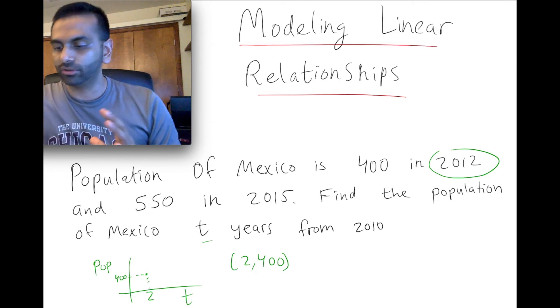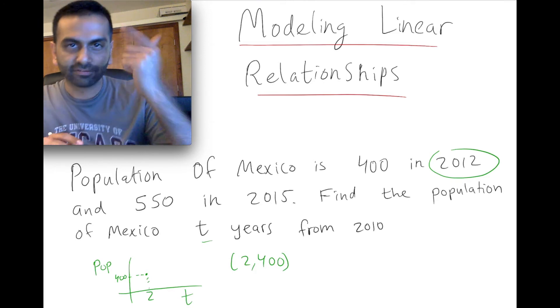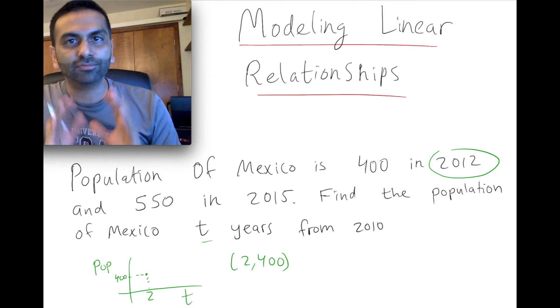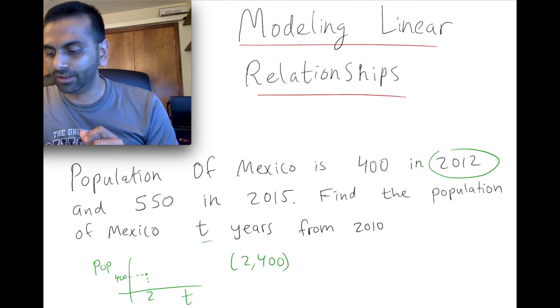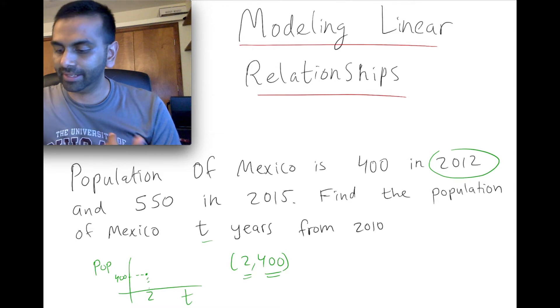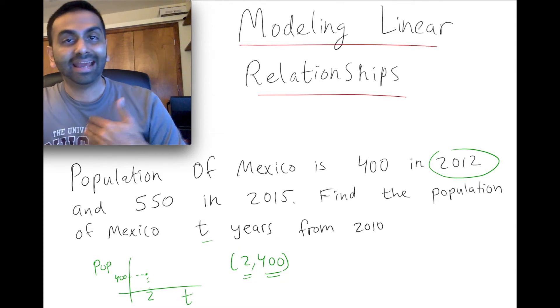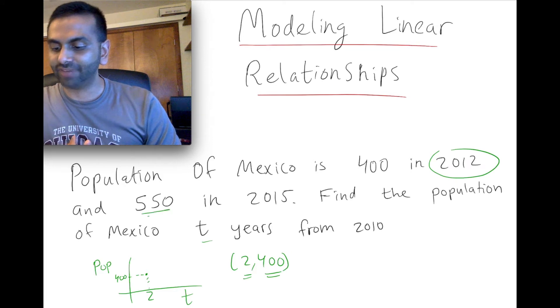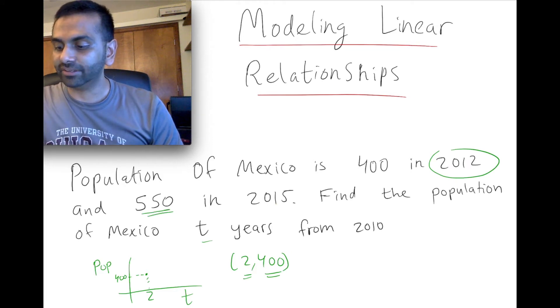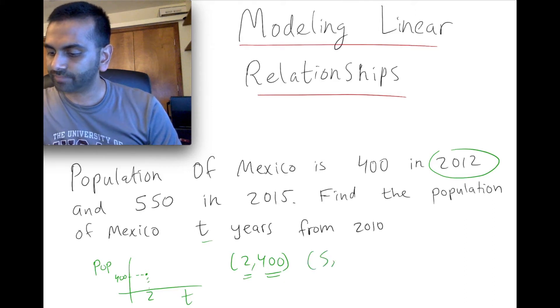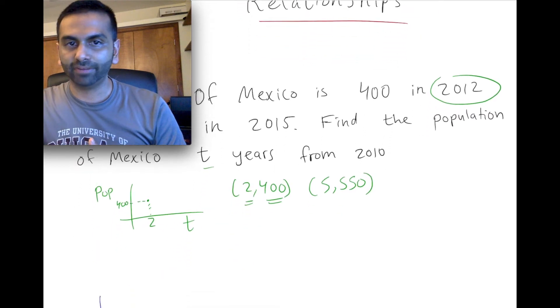Looking at this, a long story short, looking at this paragraph, the first thing we're taking away from it is, alright, the line that I'm trying to find contains a point 2 comma 400, meaning 2 years since 2010, the population is 400. And the other point that it contains is 550 for the Y value, and 2015, which is 5 years since 2010. So 5 comma 550. So those are the two points that I'm being given.